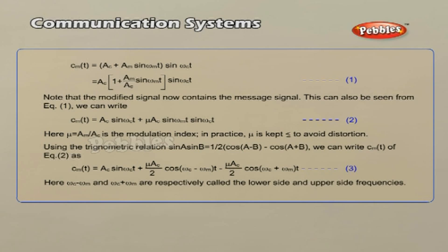The modulating signal cm(t) can be written as shown. The modulated signal now consists of a carrier wave of frequency ωc plus two sinusoidal waves each with a frequency slightly different known as sidebands.